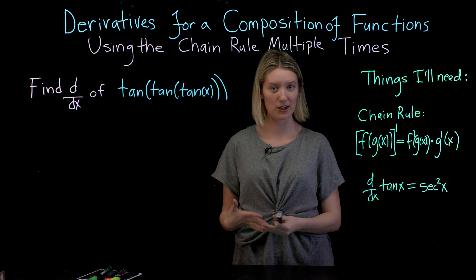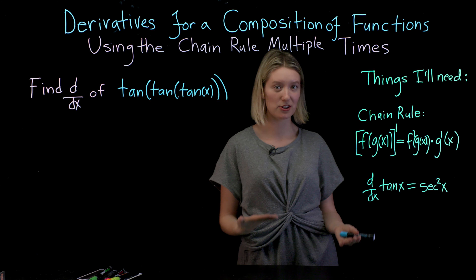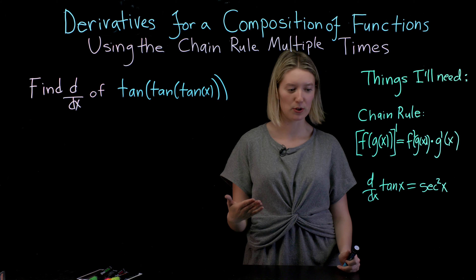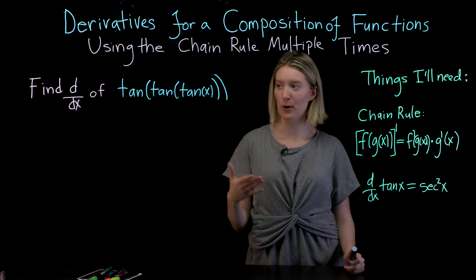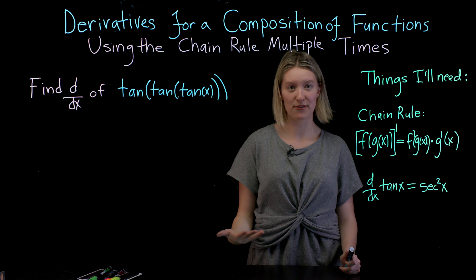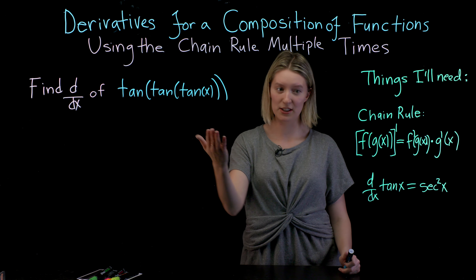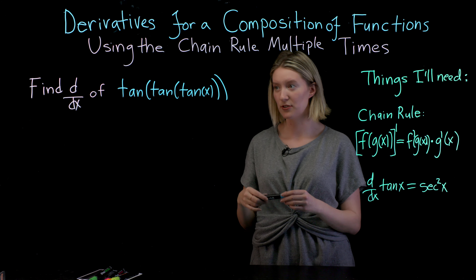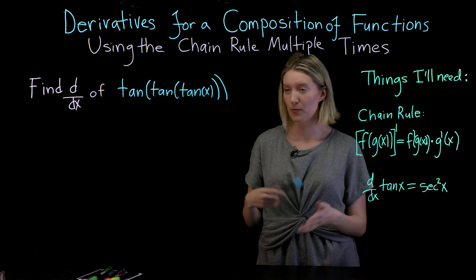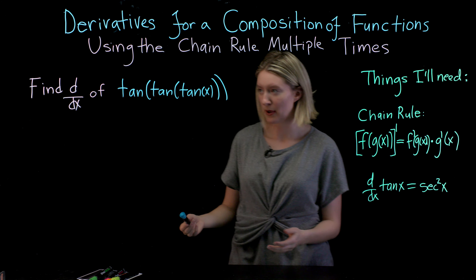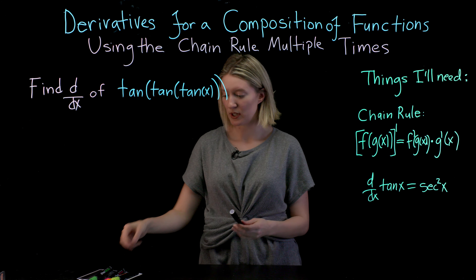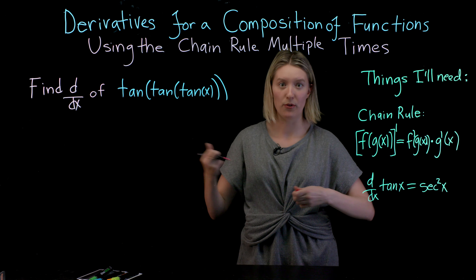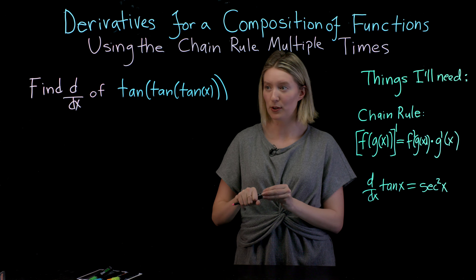Before we get started, two key pieces of information we'll need: we should know what the chain rule is, and we should also know that the derivative of the most basic function related to this — tangent of x — is secant squared of x. When starting this problem, I'm going to do the same thing as I would in a chain rule example with a single use.